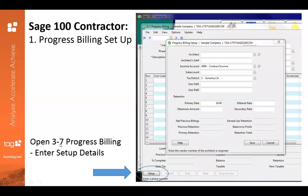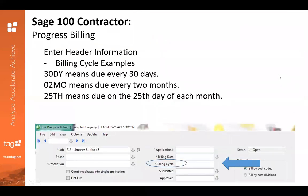It's pretty simple and easy. You'll put in all this information, and then you will need to enter in all of the header information back in that 3-7 progress billing window. The items with asterisks are required, so you will need to put something into these fields in order to save the record. As long as you have those pieces of information, you can populate and build on that with those additional fields.